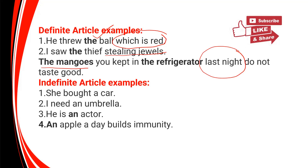Now see the examples of indefinite article usage. 'She bought a car' — not particular. 'I need an umbrella' — you can give any umbrella. 'He is an actor.' 'An apple a day builds immunity.' Here I am not specific — it can be a green apple or a red apple. So, 'an apple a day builds immunity'.